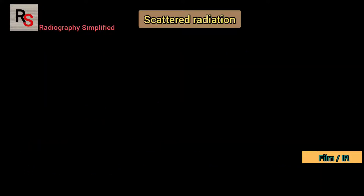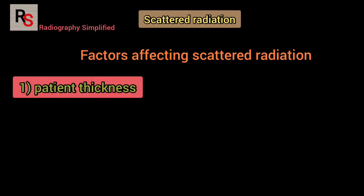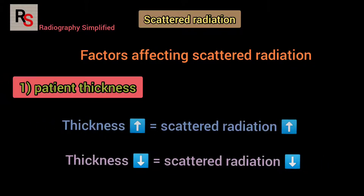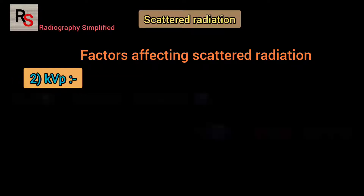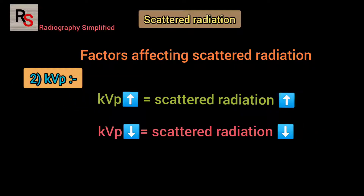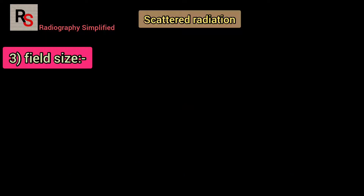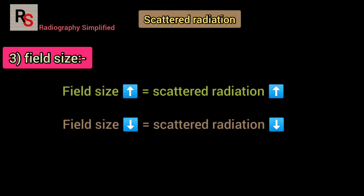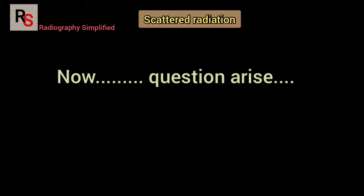Factors affecting scattered radiation: first, patient thickness — thicker the part to be examined means more scattered radiation. Second, kVp — higher kVp means more scattered radiation as the Compton effect is more predominant at higher kVp. Third, field size — larger field size means more scattered radiation, therefore collimation is very important.